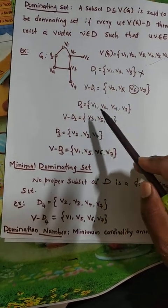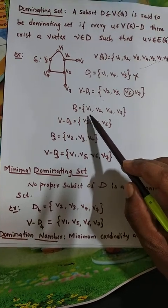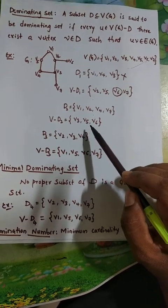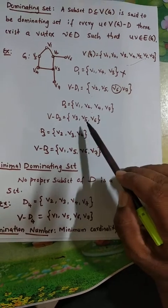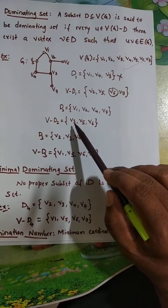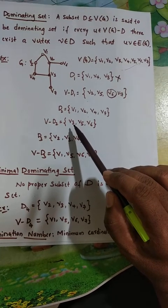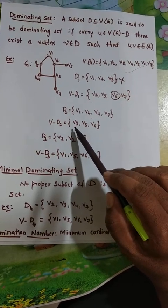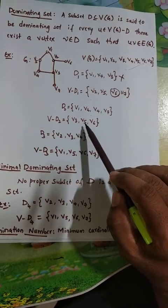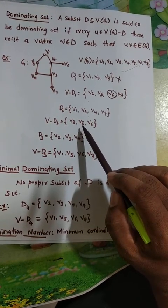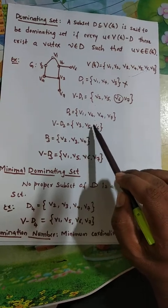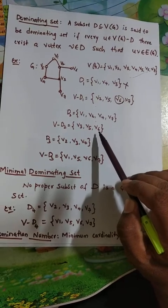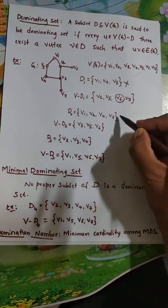Next, consider another set D2 = {V1, V2, V4, V7}. Its complement is {V3, V5, V6}. Let us verify whether D2 is a dominating set. V3 is adjacent to V2, V4, and V7, all of which are present in D2. V5 is adjacent to V1 and V4, both present in D2.